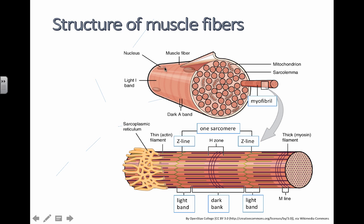Your muscles are made up of bundles of muscle fibers, and each muscle fiber is made up of a bunch of myofibrils. When you zoom in and look at the actual myofibril, that's when you're talking about the bands you can see in electron micrographs — Z lines, light bands, and dark bands — and you need to be able to recognize what this stuff looks like under the microscope.